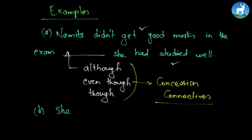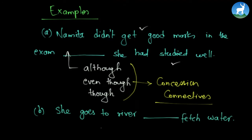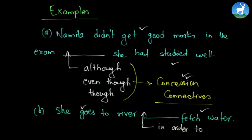Now let us look at another example: she goes to the river, blank, fetch water. Fetch means to bring. We have one idea followed by another — and these ideas are complementing each other, not contrasting. So which connective are we going to use — concession, or reason and purpose? We are going to use the connectives of reason and purpose. The probable answer could be: she goes to the river in order to fetch water, or she goes to the river so that she could fetch water.